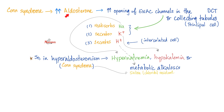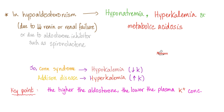Conn's syndrome: primary hyperaldosteronism. When aldosterone is high, it reabsorbs salt and water but secretes potassium and hydrogen. Therefore, in Conn's syndrome, you're excreting too much hydrogen, leading to metabolic alkalosis, and too much potassium, leading to hypokalemia. Whether hypernatremia happens depends on the aldosterone escape phenomenon — it's not a given.